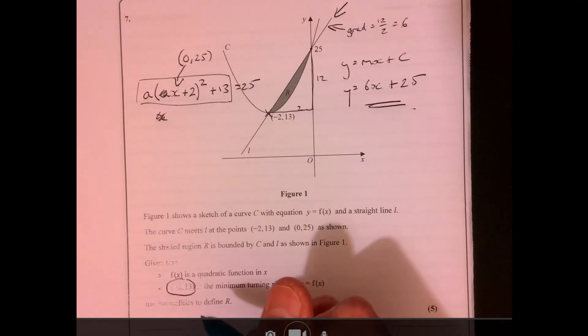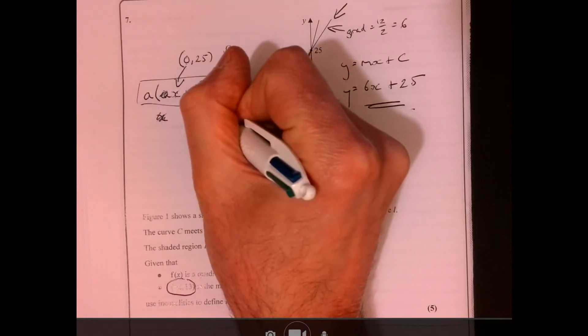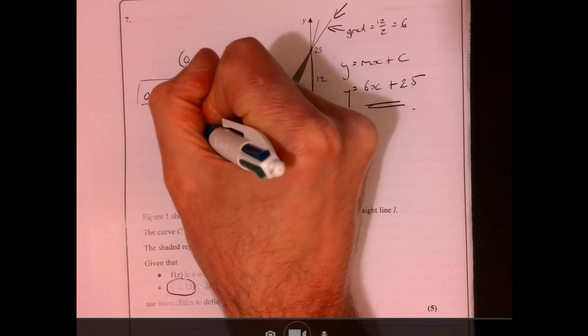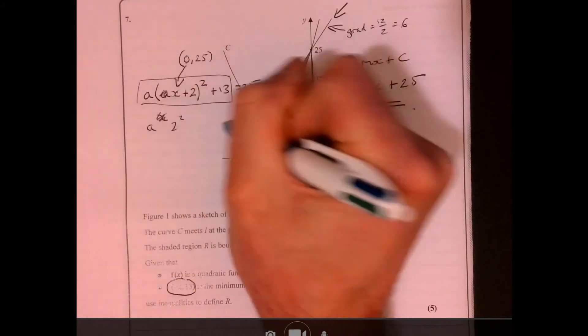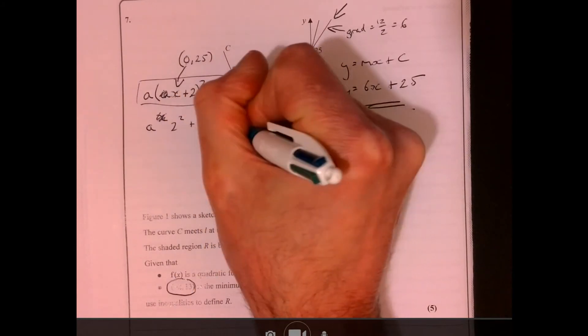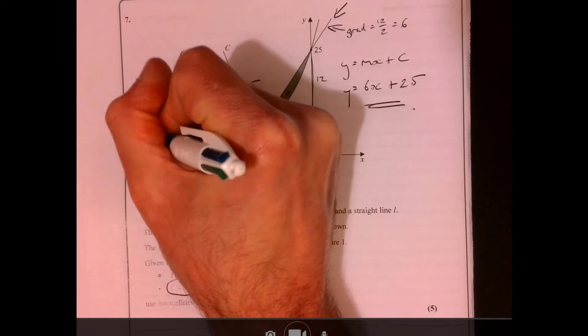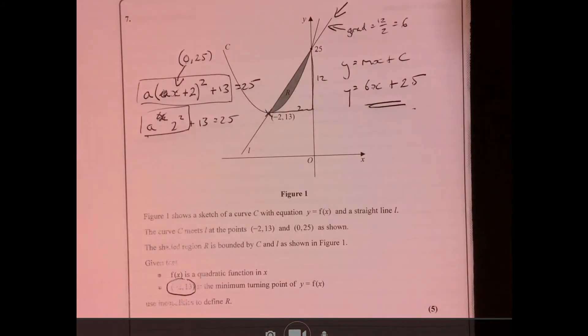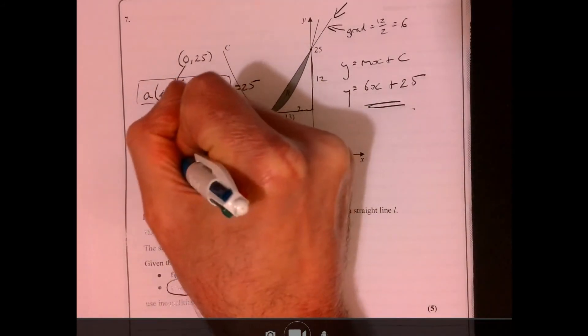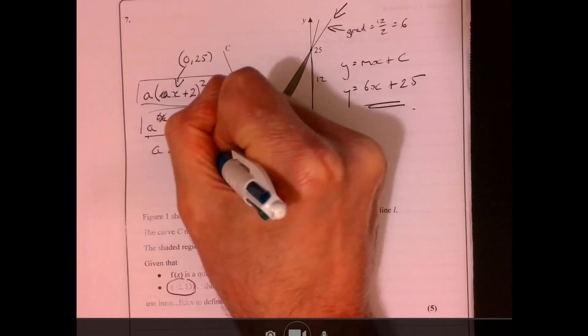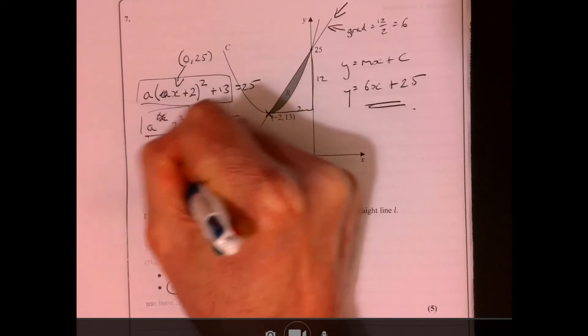So let's do it because that's going to be the easiest way forward. So let's put zero in. So that becomes a times 2 squared, multiply that a, add 13 equals 25. So a times 2 squared must be 12, so a must be 3.